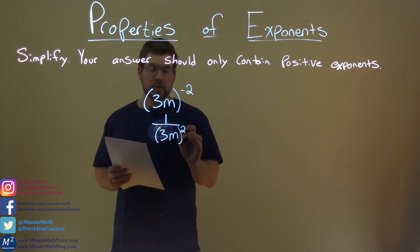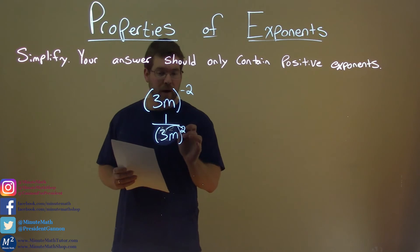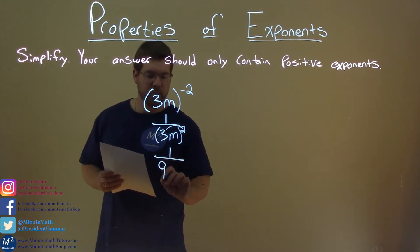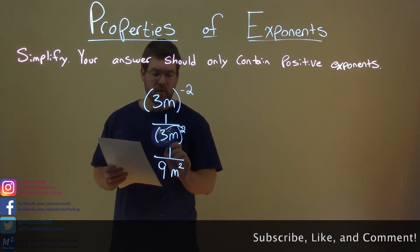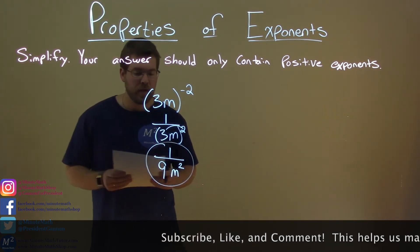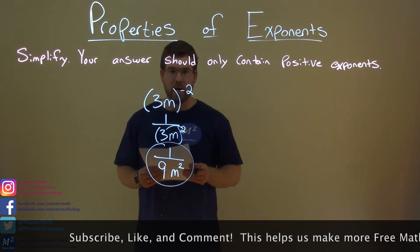Well distribute the 2 to both parts, or the squared, right? 3 squared is 9 and m squared, right, is just m squared. And so our answer here is fairly simple, is 1 over 9m squared.